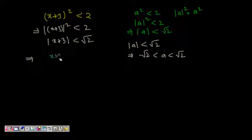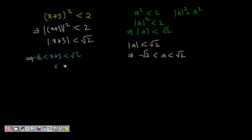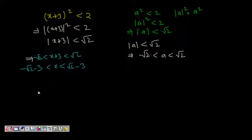So x plus 3 is less than root 2 and greater than minus root 2. That means x is less than root 2 minus 3 and greater than minus root 2 minus 3. Both bounds are negative, so the solution interval has two negative endpoints.